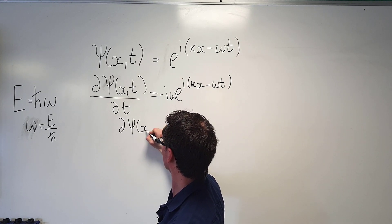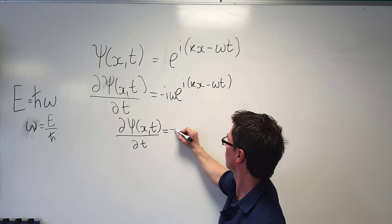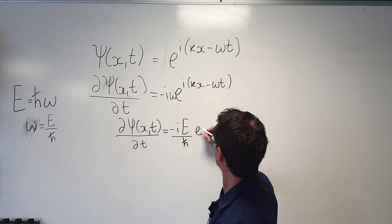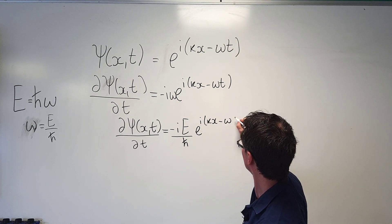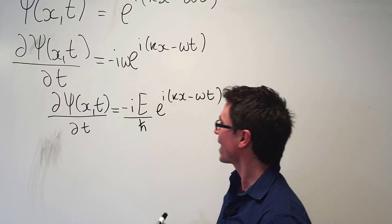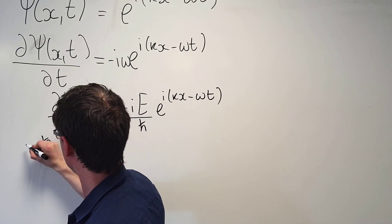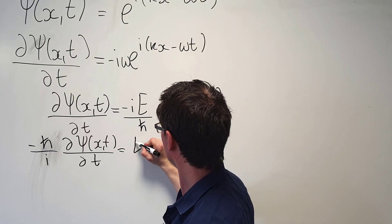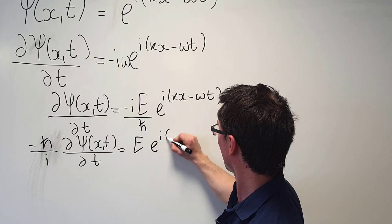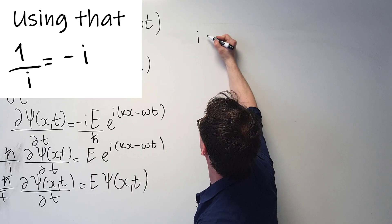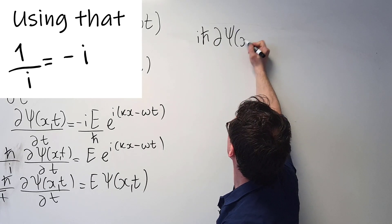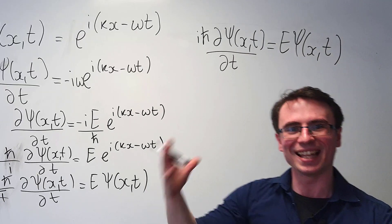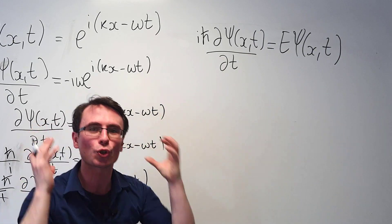Now what we're going to get is d psi, the function of x and t, by dt is equal to minus i, and rather than omega I'm going to write the energy over h-bar, and then I get a factor of e to the i kx minus omega t. What we're going to get is h-bar over minus i, d psi x of t partial derivative with respect to t, is equal to E multiplied by e to the i kx minus omega t. So i h-bar d psi of x of t by dt is equal to the energy times psi x t, and this here is the time-dependent Schrödinger equation.